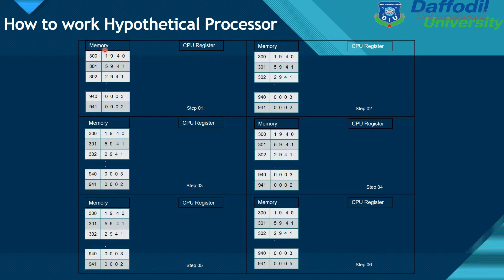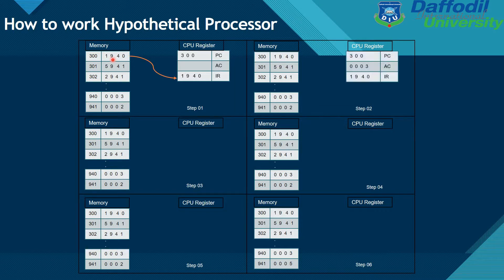Now I will discuss how this processor works. The first memory address is 300. The data at address 300 is 1940. The first beat — the opcode — represents 'Load AC from memory', and the value 940 is the memory address from which the data is loaded into the AC.